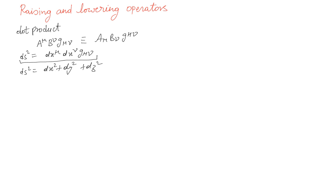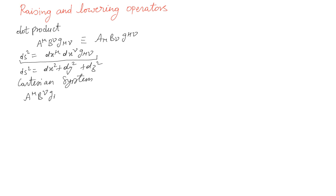So g_mu_nu encodes the distance information between two points, and if you integrate that you can go from one point to another. For example, taking the dot product in a simple case: if we talk about a Cartesian system, the dot product is defined as a_mu b_nu g_mu_nu.